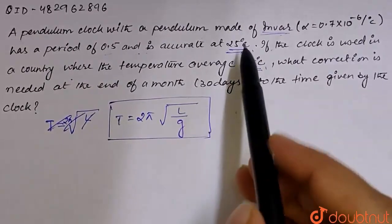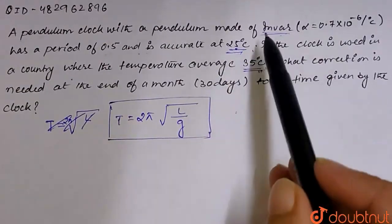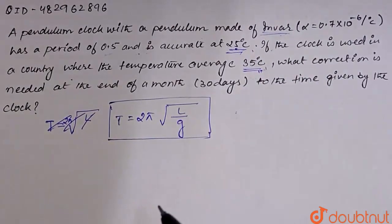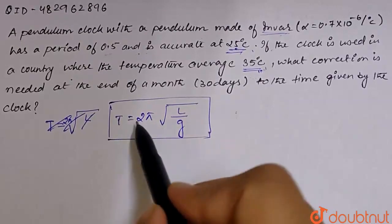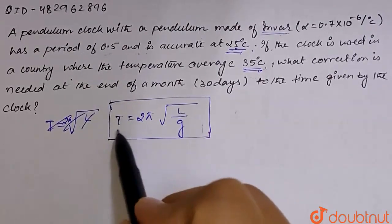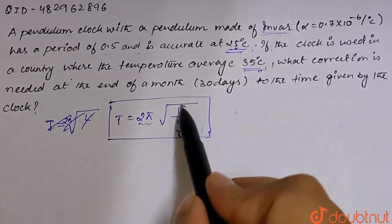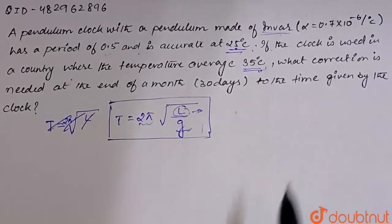So the temperature is 25 degrees, pendulum clock is at 35 degrees celsius, definitely our temperature increases. Because the temperature increases, what will happen? The pendulum length will change. So this time period, 2 pi is a constant and acceleration due to gravity is constant, so the change will be just length.